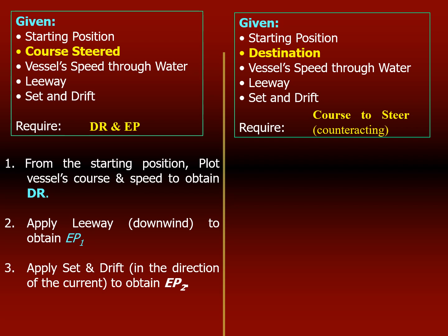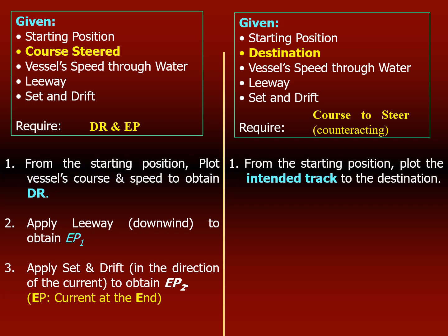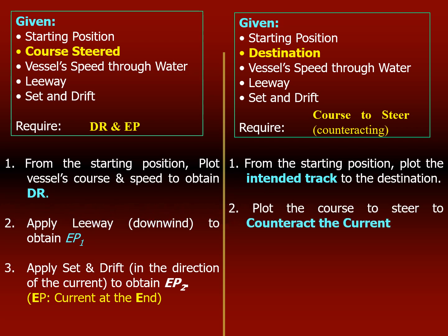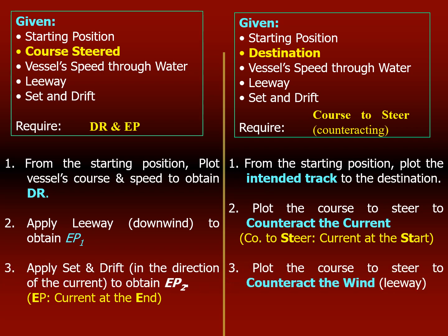EP2 takes into account the direction and drift of the current. When counteracting — shown on the right side of the screen — from the starting position you plot the intended track to the destination, which is your course made good. Then you counteract for the current first by drawing the current and finding the course to steer to counteract it. Then you determine the leeway — how the wind is pushing the vessel — and steer into the wind to counteract the effect.